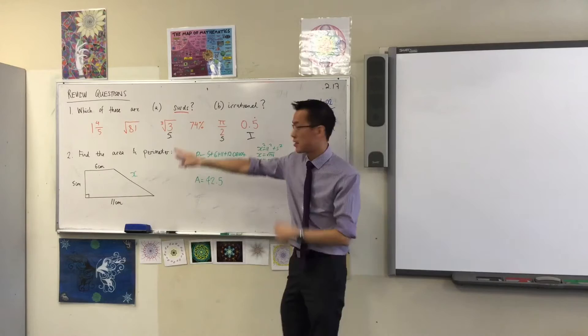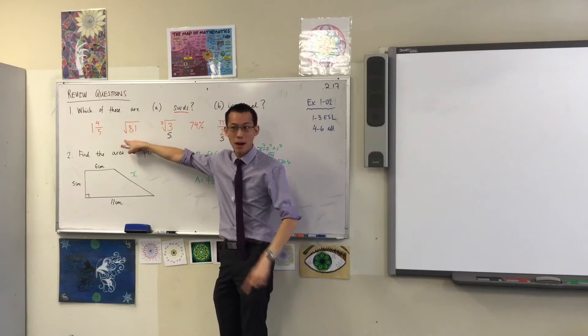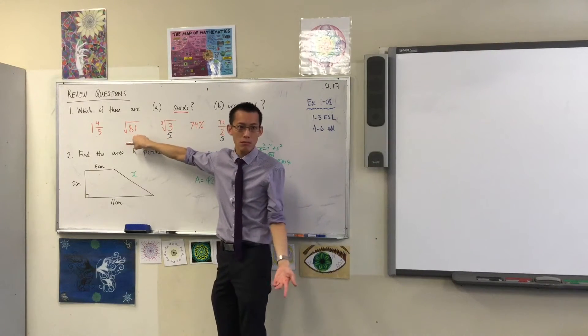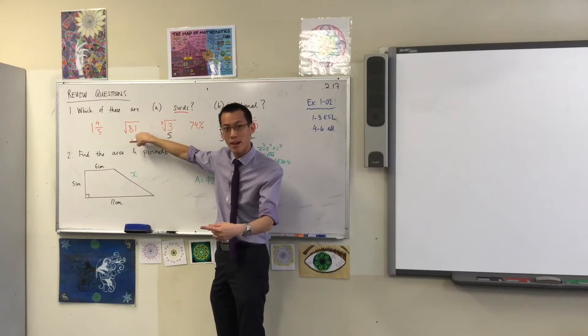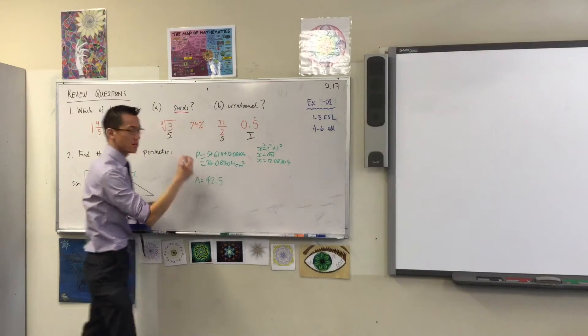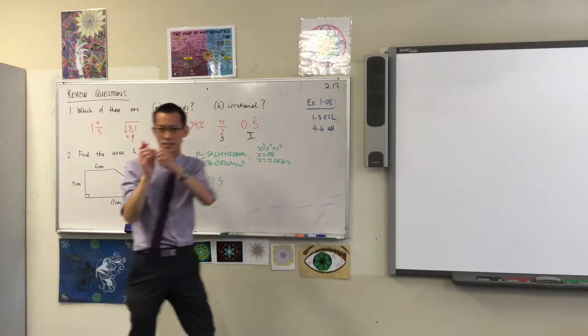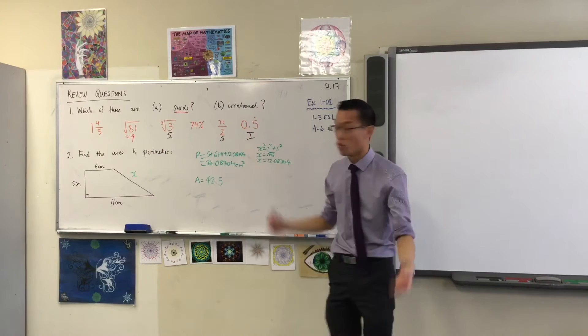So for that reason, you can see there's a square root here, but Brian's correctly noted that it's not a surd. Why not? Because 81 is a perfect square, which means the square root is just 9, and that's not a weird decimal thing going on forever, so it's not a surd.